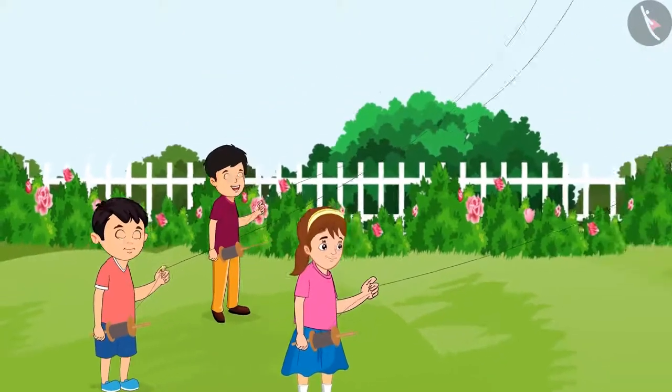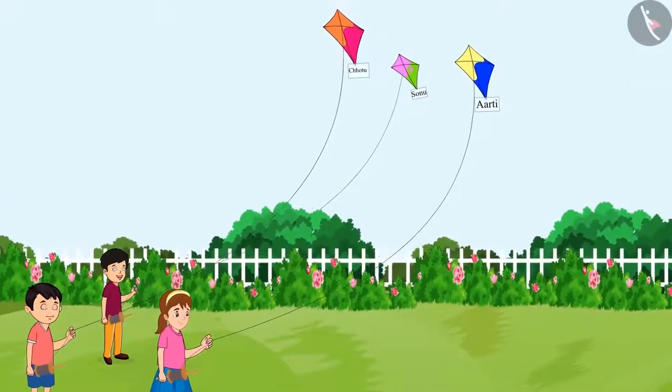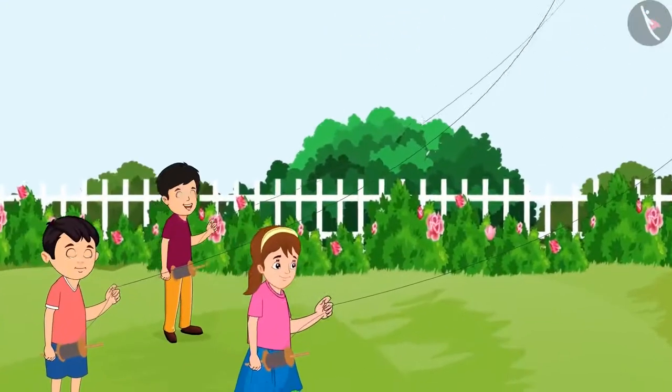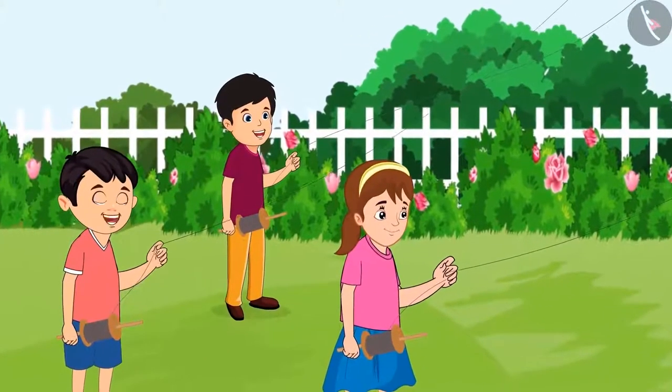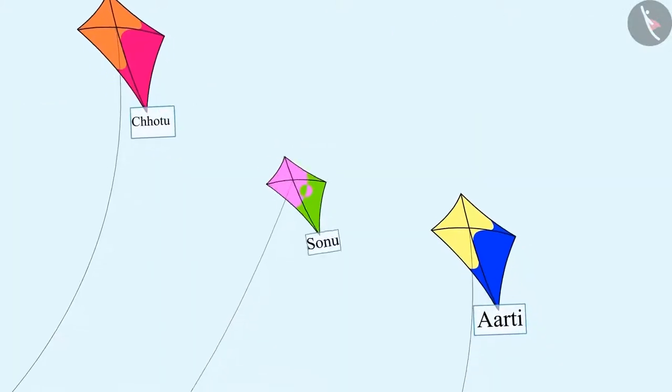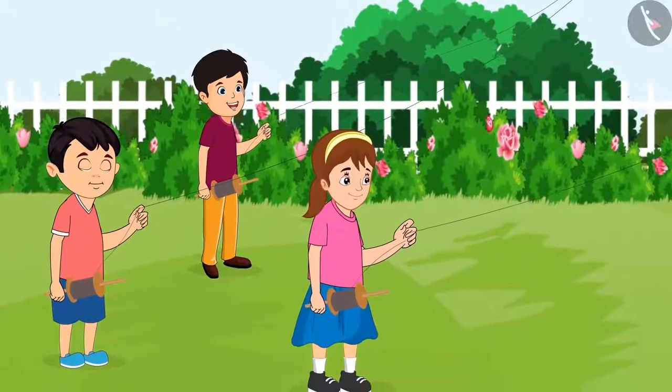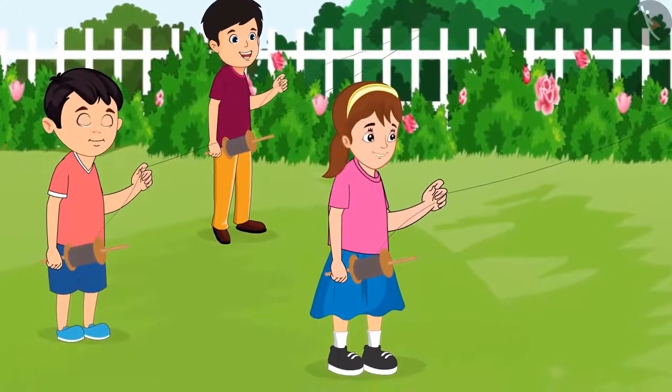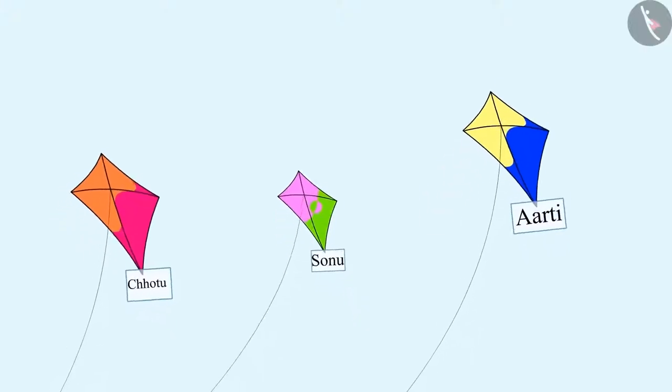Okay, let's see. When the three of them were flying kites, Chotu said that time, look my kite is flying high. Okay, now I will fly my kite higher than your kite.